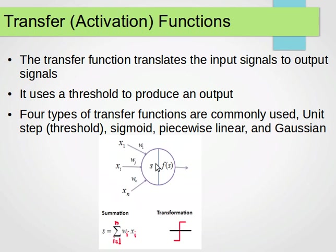Now, we have, we mentioned summation and then transformation function, the thresholding. The transfer function, what it does, it translates the input signals to output signals. It uses a threshold to produce an output, so we have some value threshold, and we have four types of transfer functions.